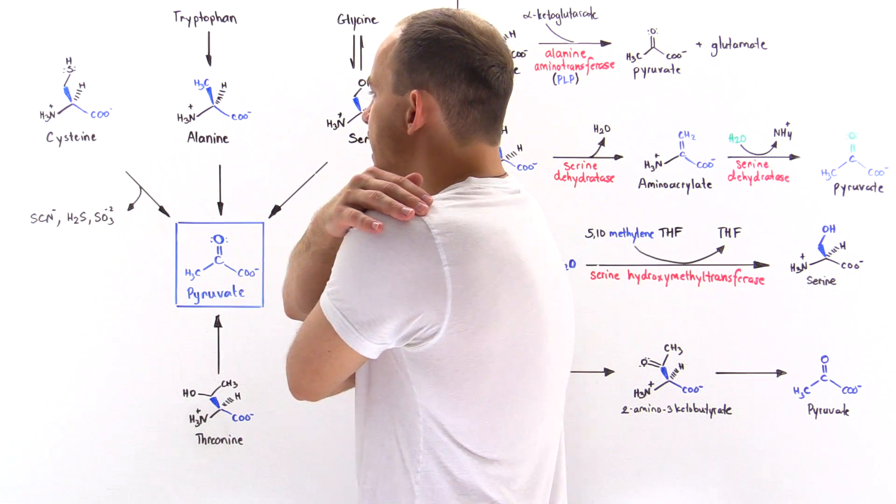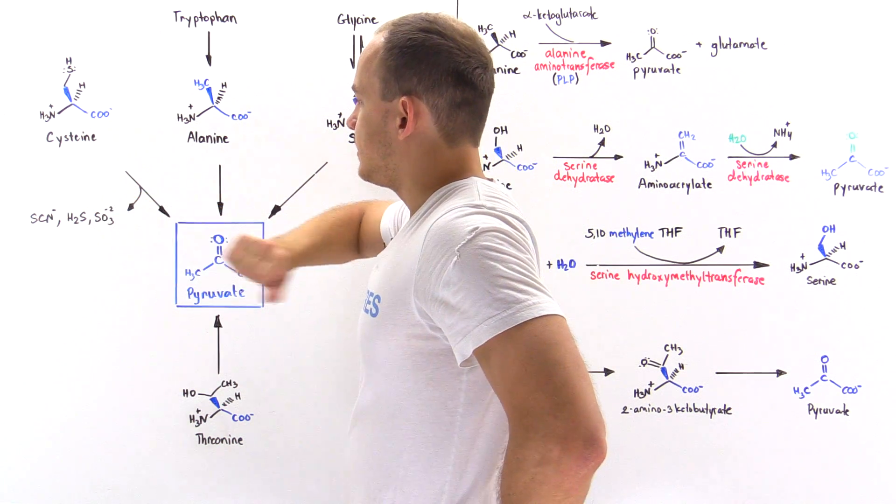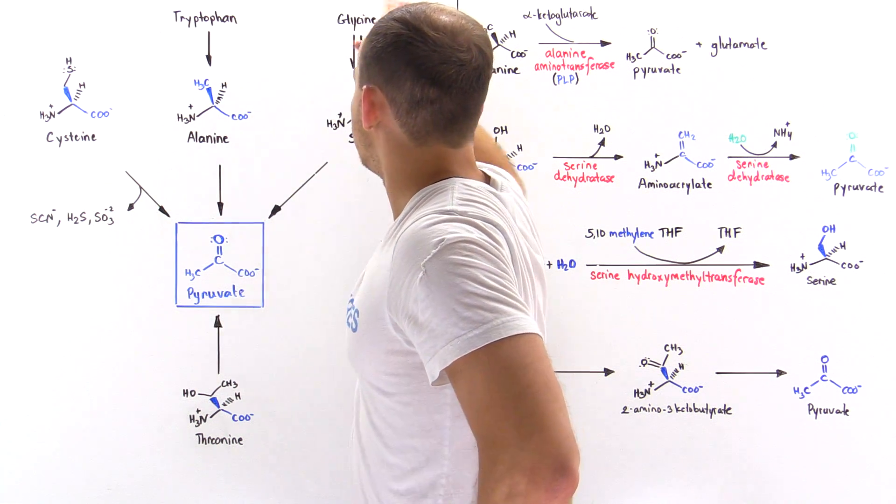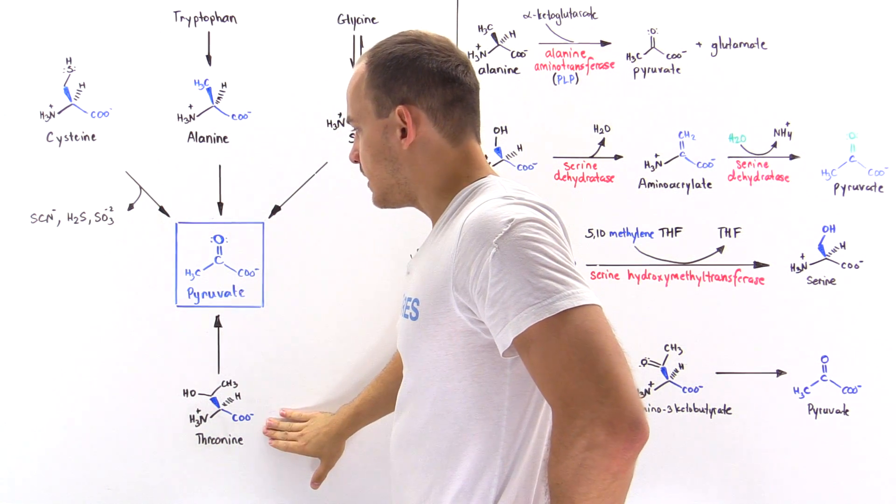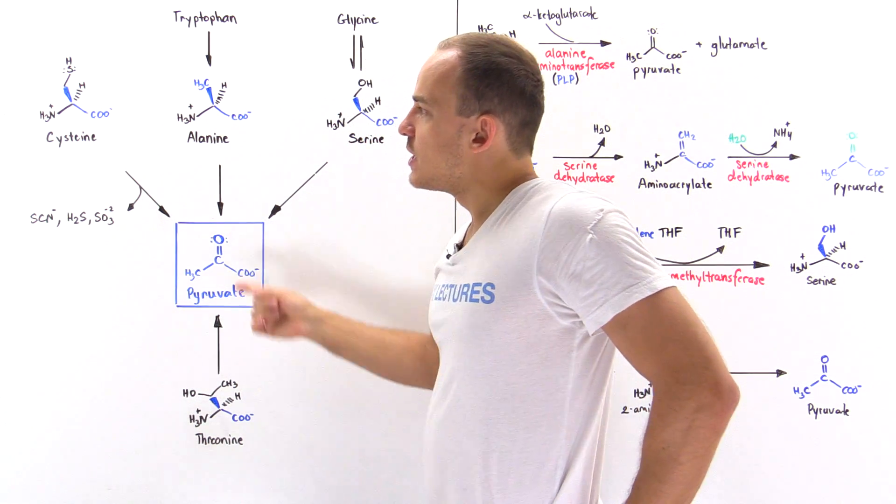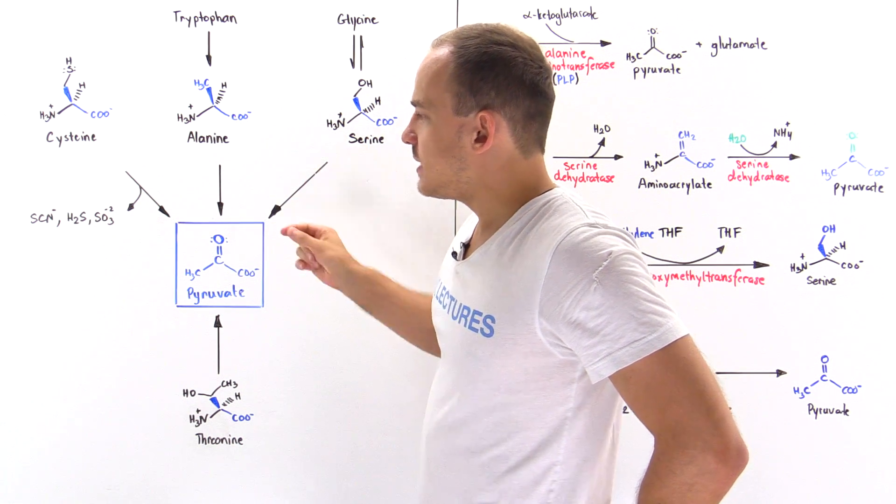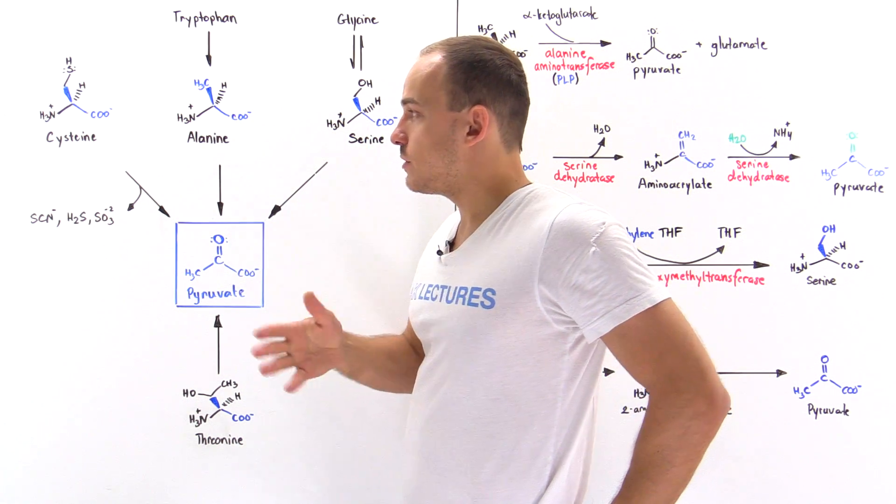So let's begin with cysteine. We see that cysteine, alanine, tryptophan, glycine, serine, and threonine can all be transformed into pyruvate. Let's begin with cysteine. Now the conversion of cysteine into pyruvate is actually pretty complicated because there are several different pathways by which cysteine can be transformed into pyruvate, so we're not going to look at the details of those steps.